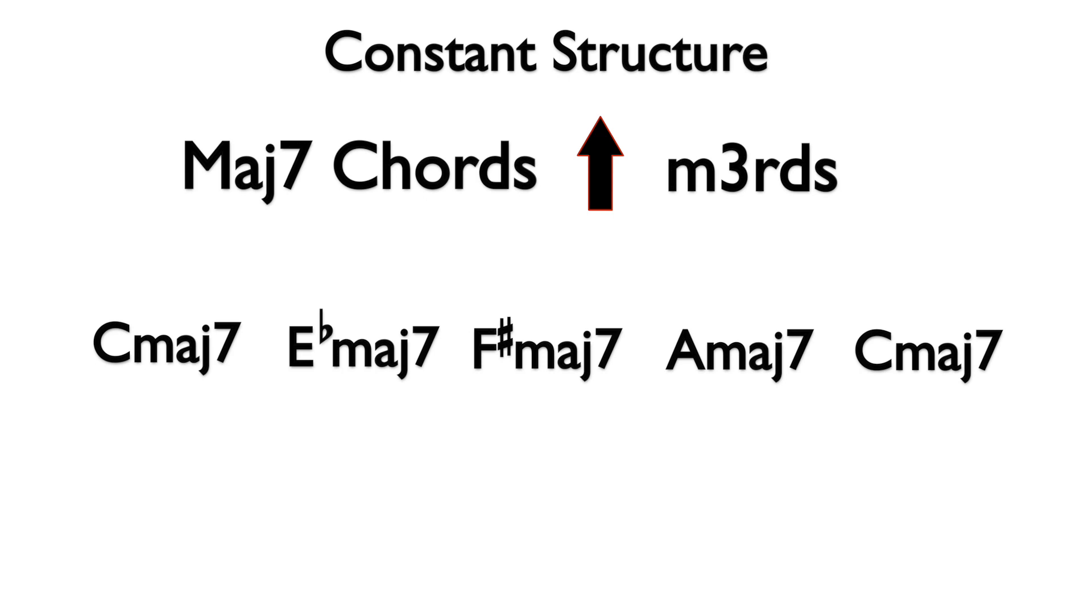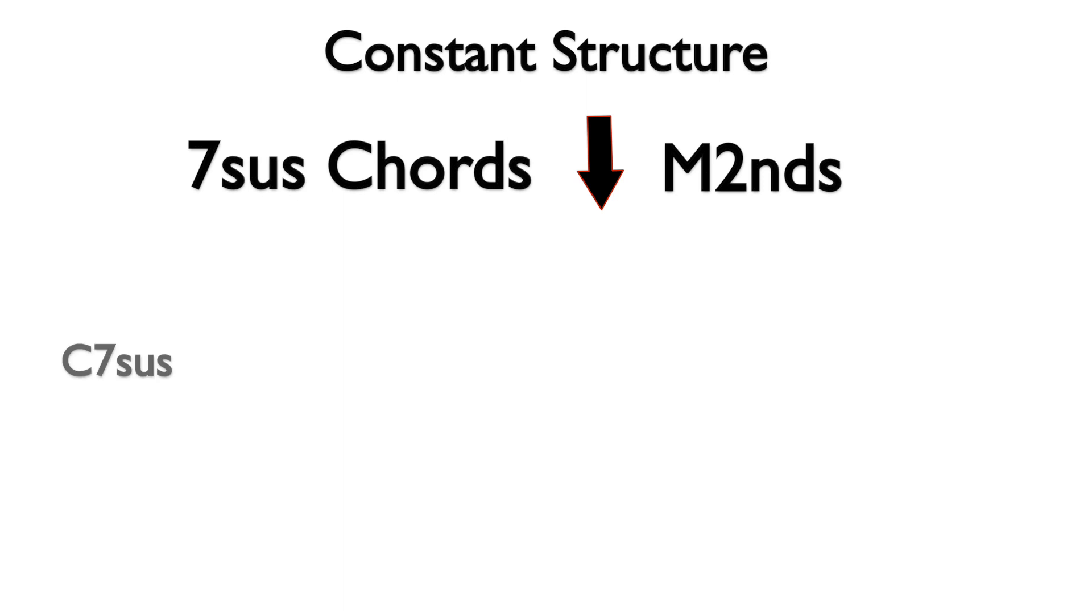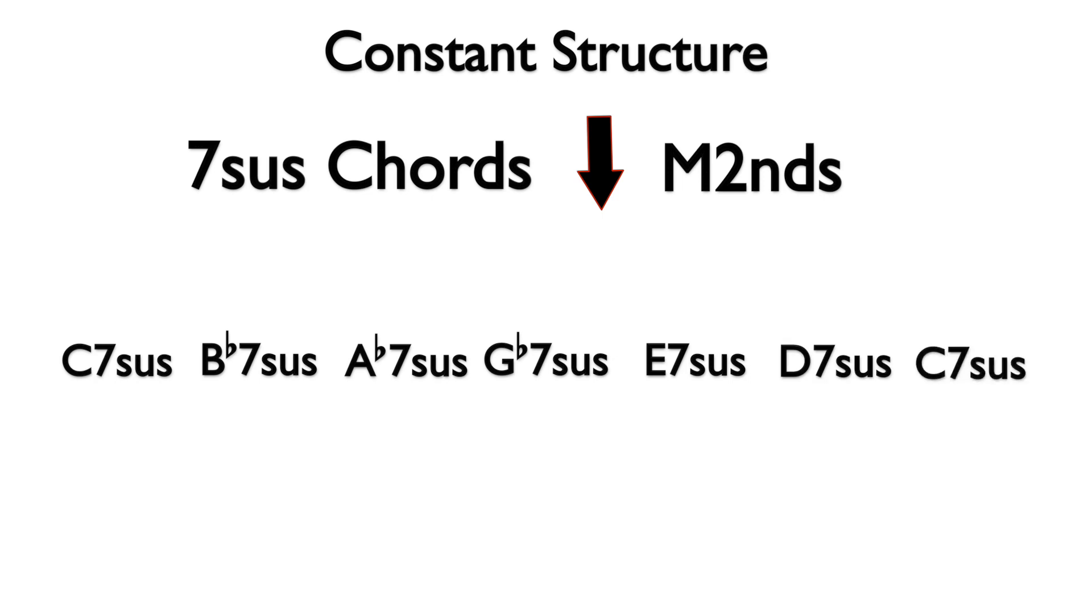Here is an example using dominant 7th sus 4 chords in major 2nds: C7 sus, B flat 7, A flat 7, G flat 7, E7 sus, D7 sus, and back to C7 sus. Here is the sound of this progression.